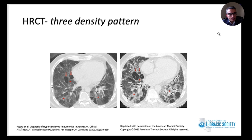One CT finding highly specific for HP is what we call the three-density pattern — normal lung, lung infiltrated by inflammatory cells giving ground glass opacities, and areas of air trapping. When all three densities are identified on CT scan, it is called a three-density pattern, and its presence is highly specific for hypersensitivity pneumonitis.